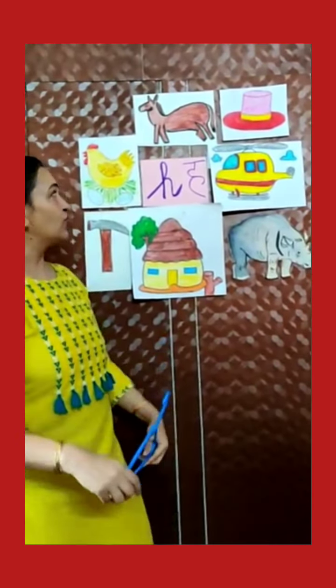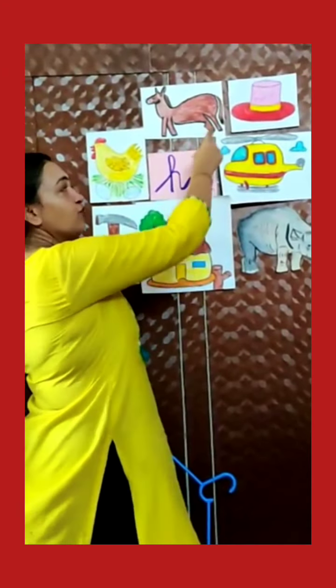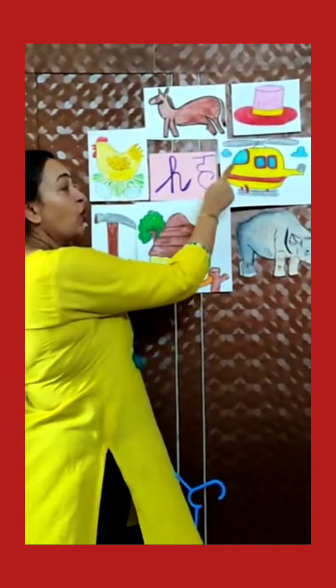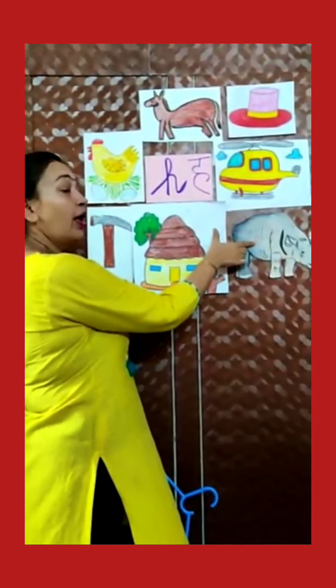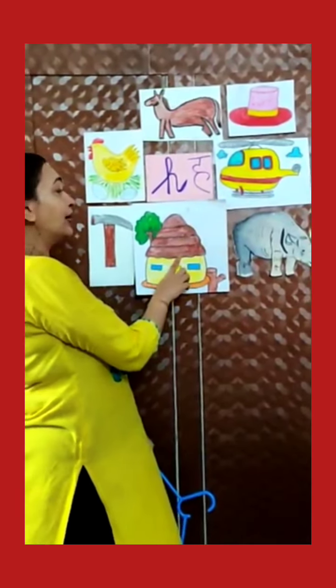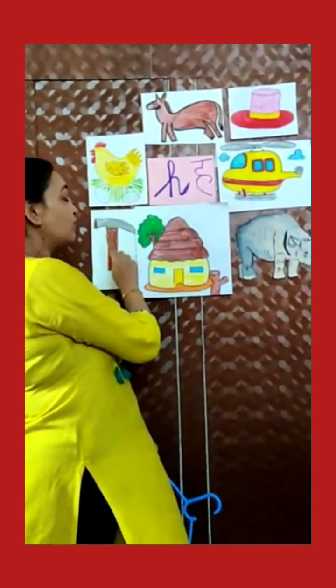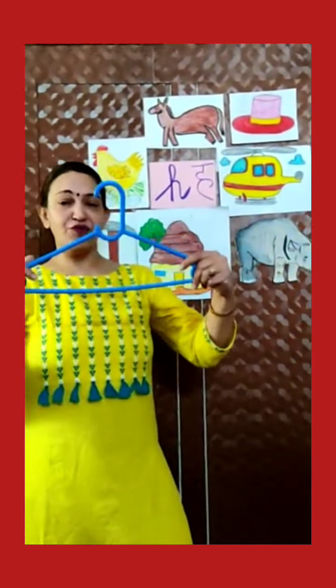Let's revise the pictures. H for horse. H for hand. H for helicopter. H for hippo. H for hut. H for hen. H for hammer. H for hanger. H for hand. H for head.